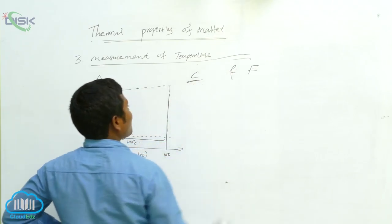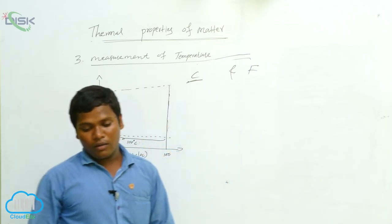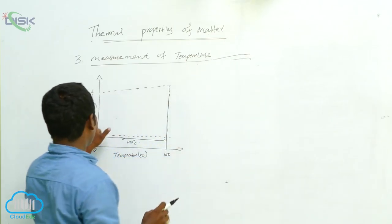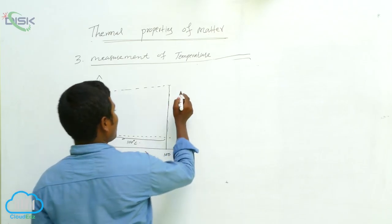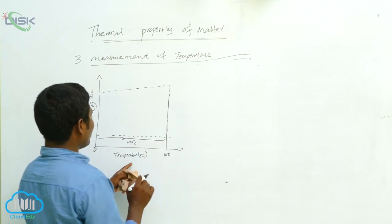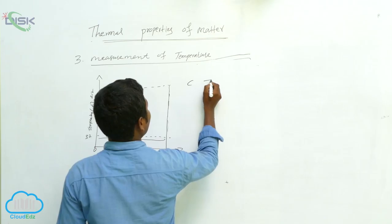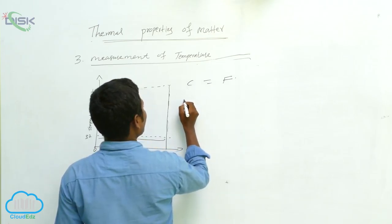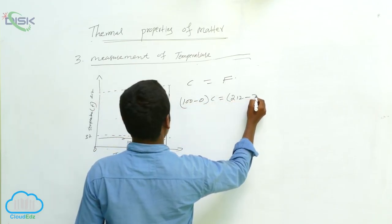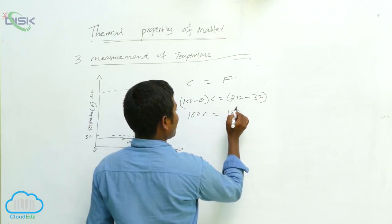Consider temperature on the x-axis as degree Centigrade, and temperature on the y-axis as Fahrenheit. For Fahrenheit, the starting point is 32 and the ending point is 212. For Celsius, the starting point is 0 and the ending point is 100. In general, Celsius is used in scientific laboratories, while Fahrenheit is used in clinical thermometers and metallurgy.